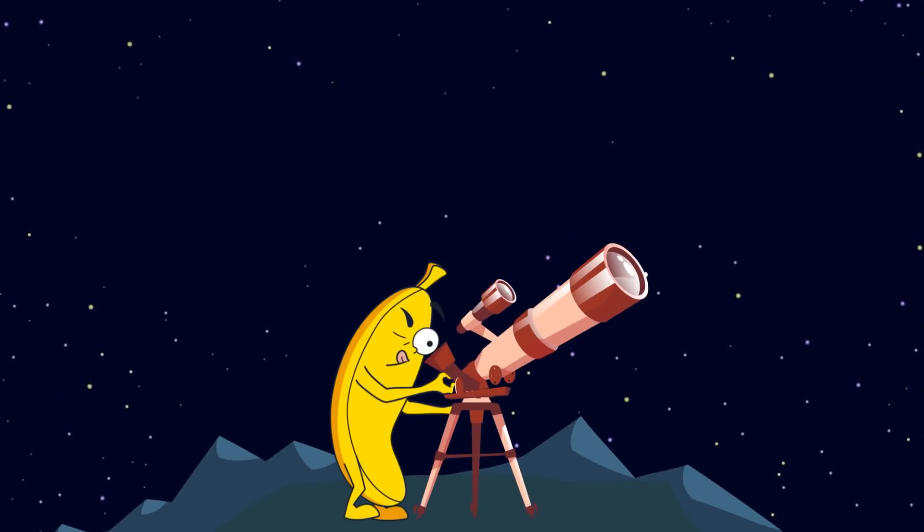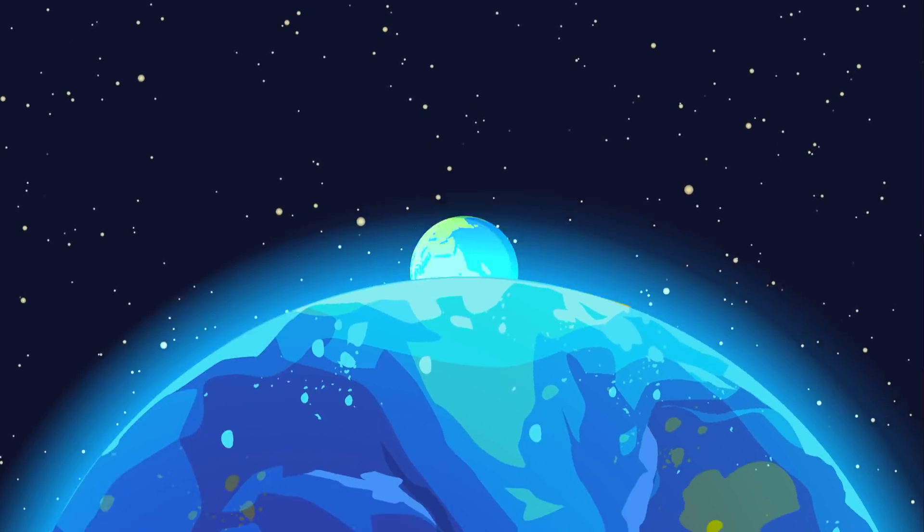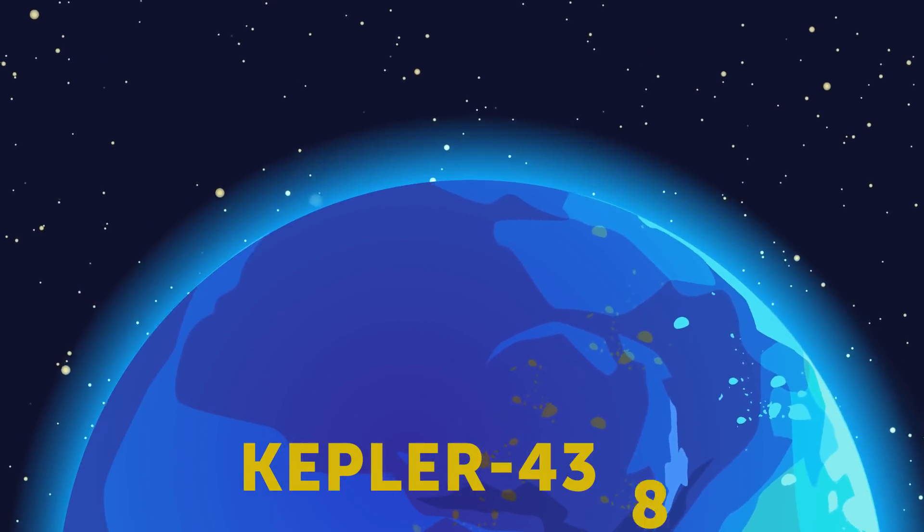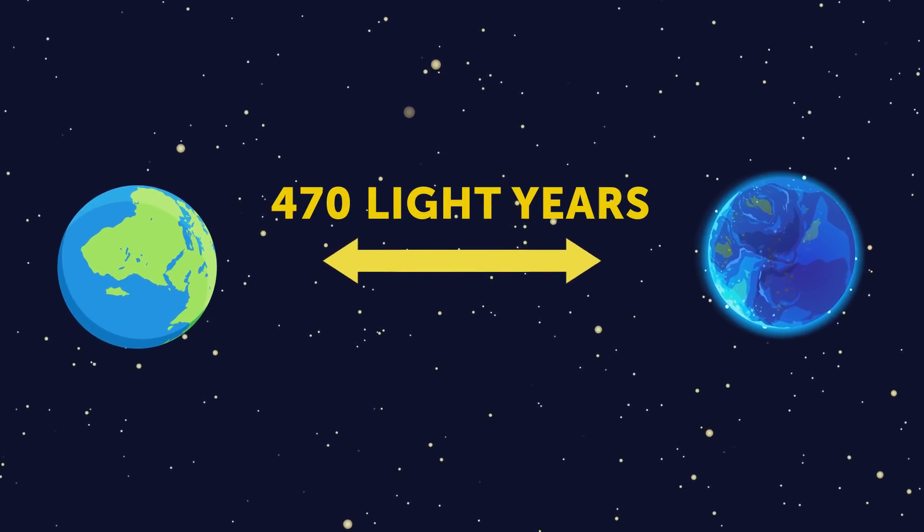And of course, they did find it, and not just one! The most similar planet to Earth was Kepler-438b, which is located 470 light-years from our planet.